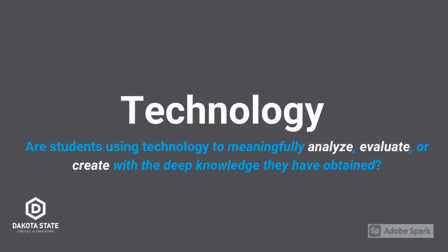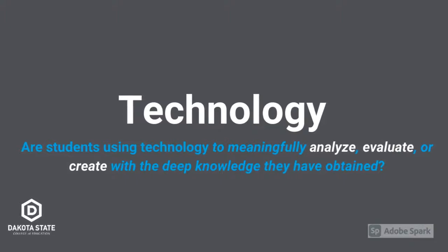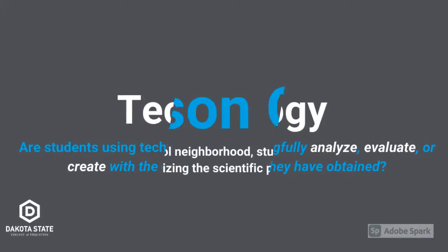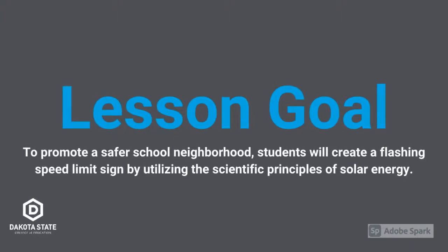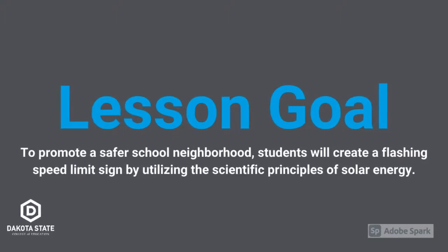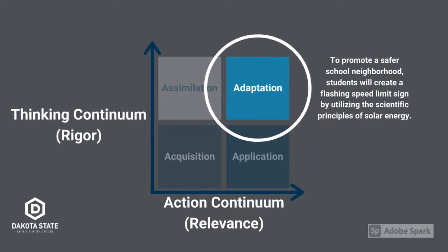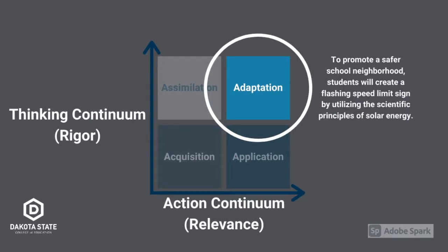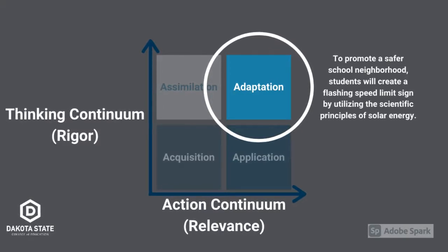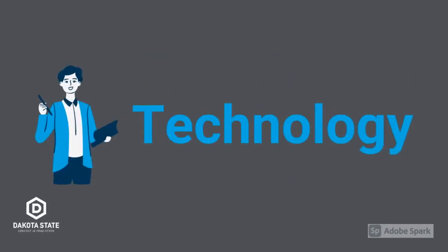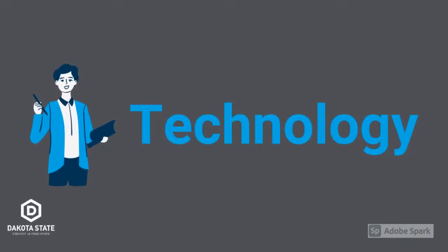Students must analyze, evaluate, and create their prototype with this knowledge, adapting it to solve the problem. Before he decides what technology to use, the teacher hones in on the goal of the lesson. The goal requires students to apply their deep knowledge in a new situation. Therefore, it falls into the adaptation quadrant — just where the teacher wants it. Only when the goal of the lesson has been identified does the teacher consider what technology to use.